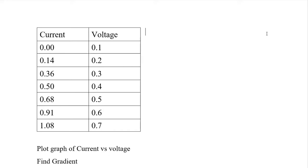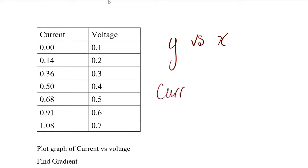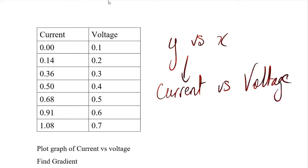We've been asked to plot a graph of current versus voltage. From your notes, we said from the very beginning that we always plot the y-axis value versus the x-axis value. So by comparing 'current versus voltage,' current is going to go on your y-axis and voltage is going to go on your x-axis. This will never change — this is the standard. So the first thing you have to do is plot our graph.